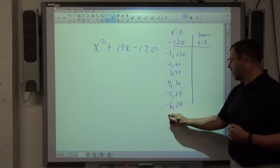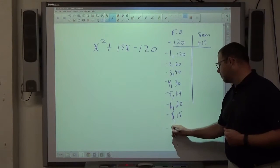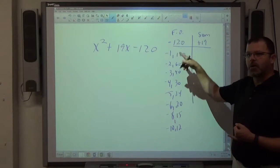-6 times 20, -7 doesn't work, -8 times 15, -9 doesn't work, -10 times 12, -11 doesn't work, 12 we've already got, and there's my whole list.